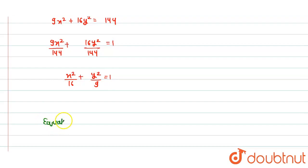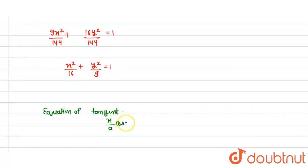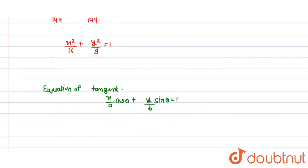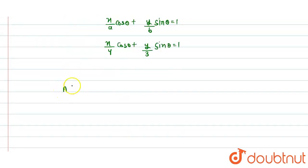The equation of tangent will be x/a·cosθ + y/b·sinθ = 1. Here a² = 16 so a = 4, and b² = 9 so b = 3. So the tangent is x/(4cosθ) + y/(3sinθ) = 1. The point A will be (4secθ, 0) and point B will be (0, 3cosecθ).